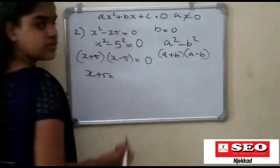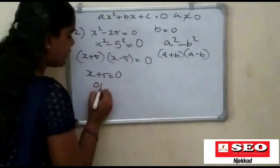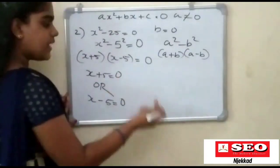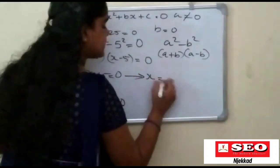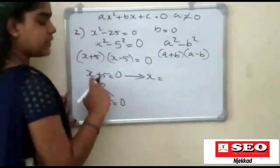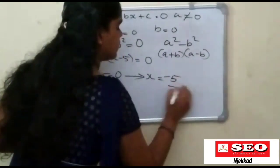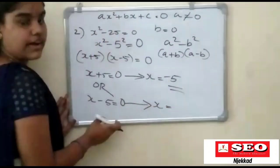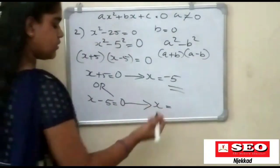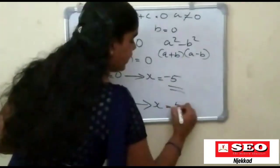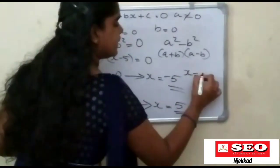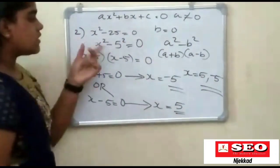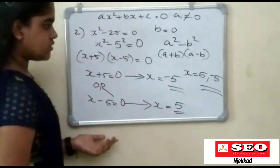Therefore x plus pi is equal to zero, or x minus pi is equal to zero. So x plus pi equals zero gives x equal to minus pi. And x minus pi equals zero gives x equal to pi. So x equals plus or minus pi.